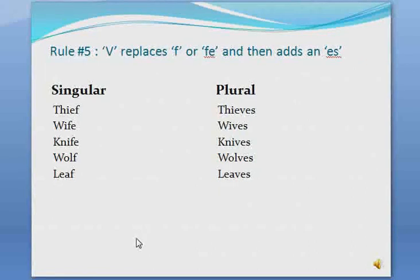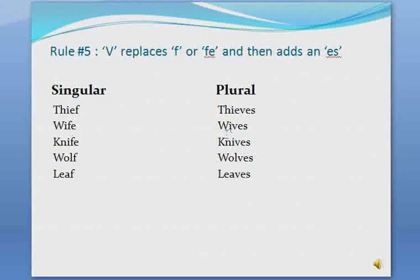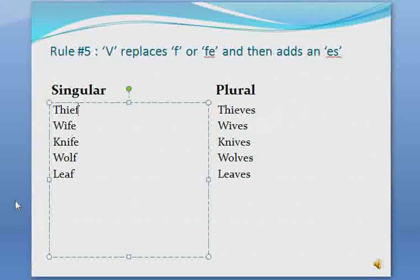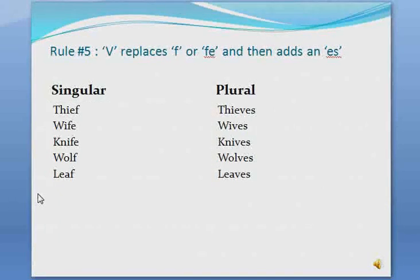Rule number five: 'v' replaces 'f' or 'fe,' and then 'es' is added. When a noun ends with 'f' or 'fe,' to make it plural we replace 'f' or 'fe' with 'v' and add 'es.' For example: thief→thieves, wife→wives, knife→knives, wolf→wolves, leaf→leaves.